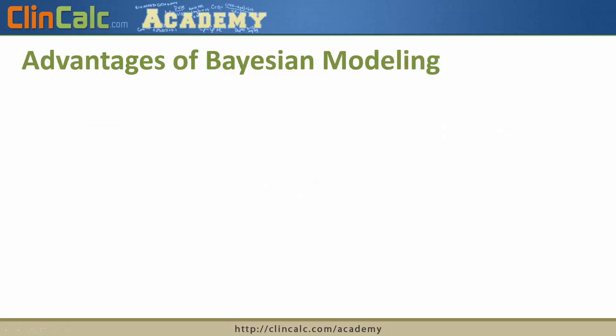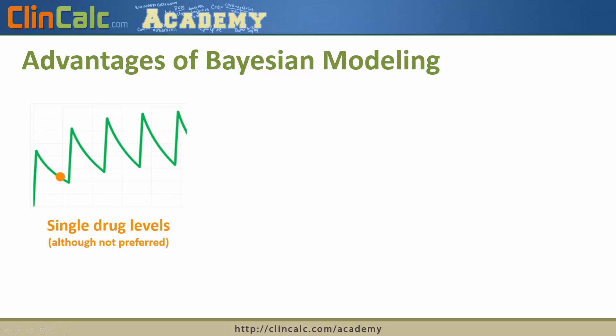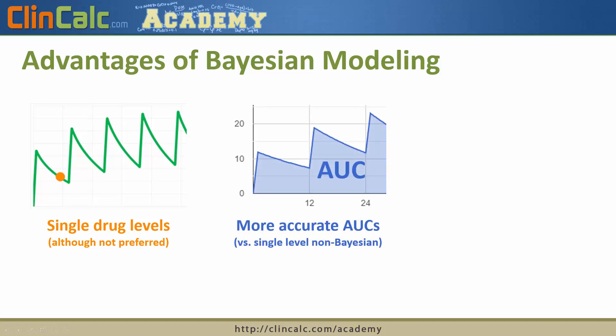Bayesian modeling isn't new, but it's becoming more popular for a variety of reasons. One advantage is that you can get a single drug level — although not preferred — and still have a more accurate representation of a patient's volume of distribution and vancomycin clearance versus historically just using a population estimate. Because of this greater accuracy in determining pharmacokinetic parameters — specifically volume of distribution and clearance — we can now come up with a better estimate of the patient's true AUC.